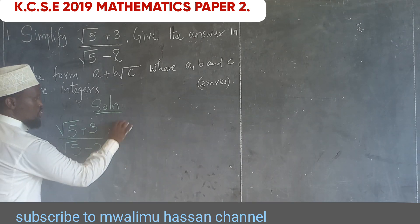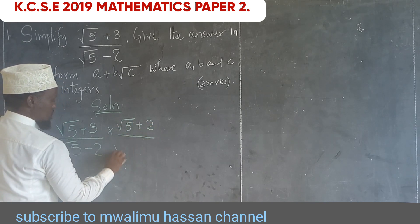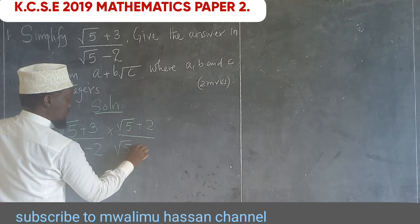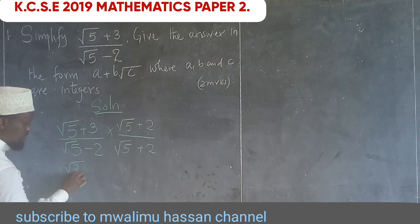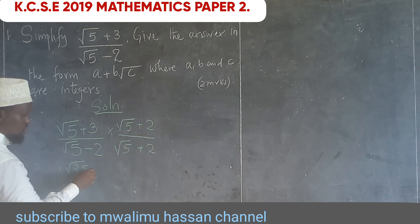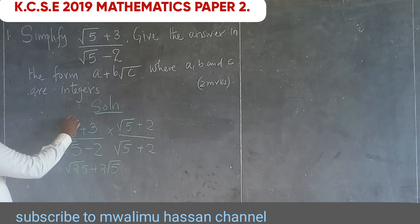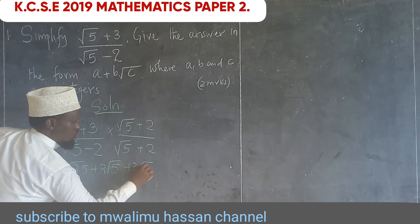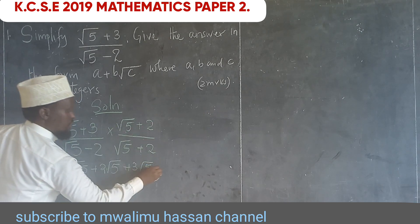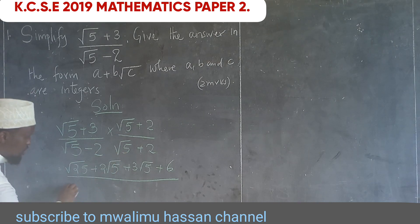So we multiply by (√5 + 2) over (√5 + 2). In the numerator: √5 times √5 gives 5, √5 times 2 gives 2√5, then 3 times √5 gives 3√5, and 3 times 2 gives plus 6. In the denominator: √5 times √5 gives root 25, and √5 times 2 gives plus 2√5.